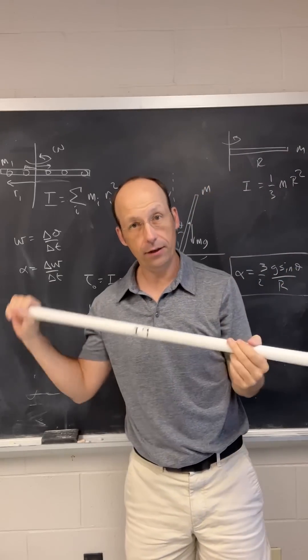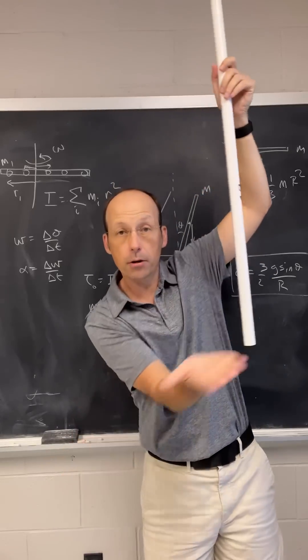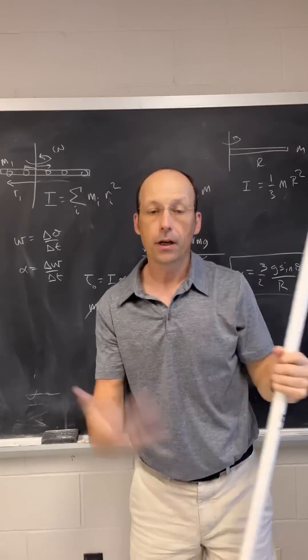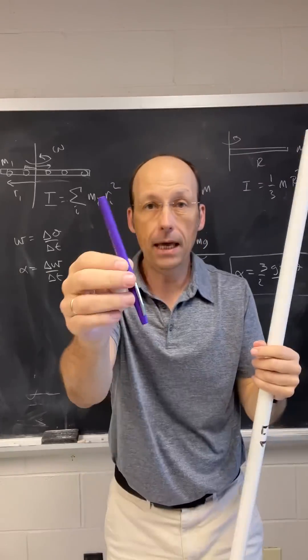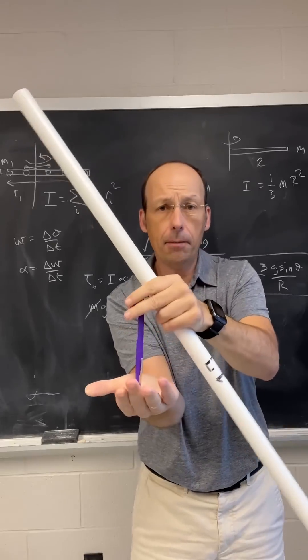And you can use that to your advantage. Because if it takes a long time to tip over, you have more time to move your hand to make it stay vertical. So you could try something simple like with a pen. It's really short. There's no way you can balance this. I can't balance it.